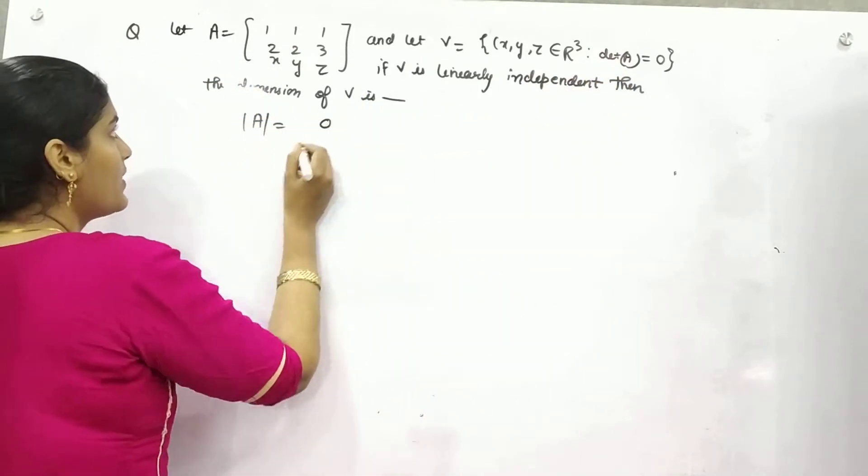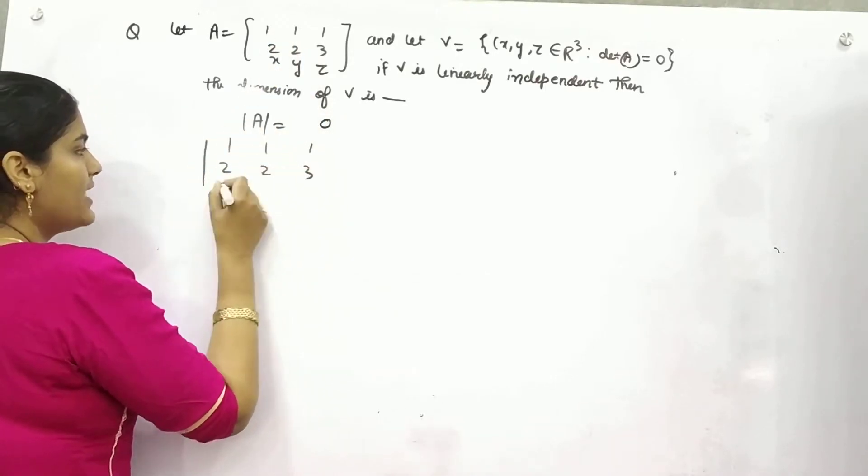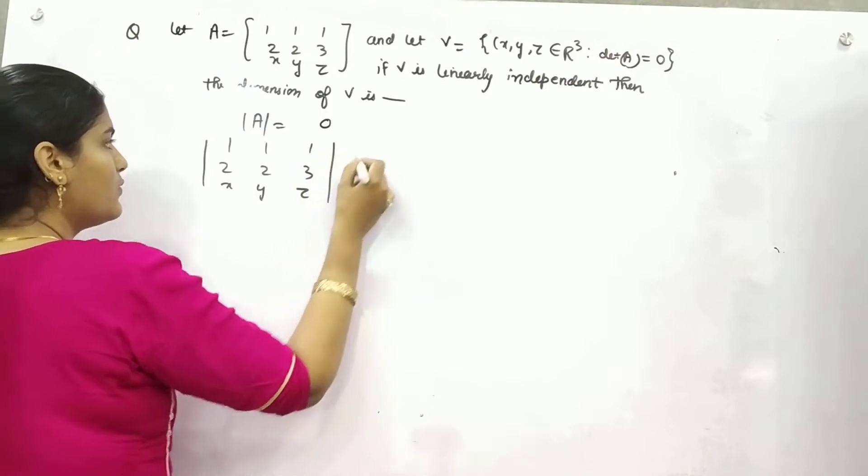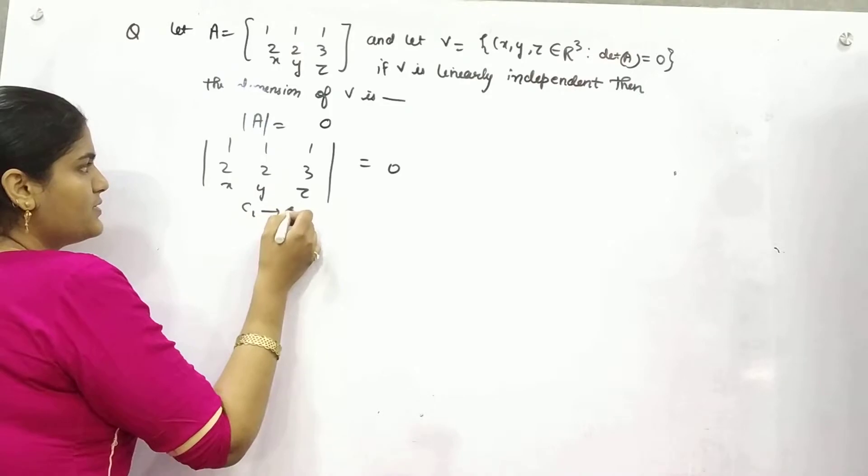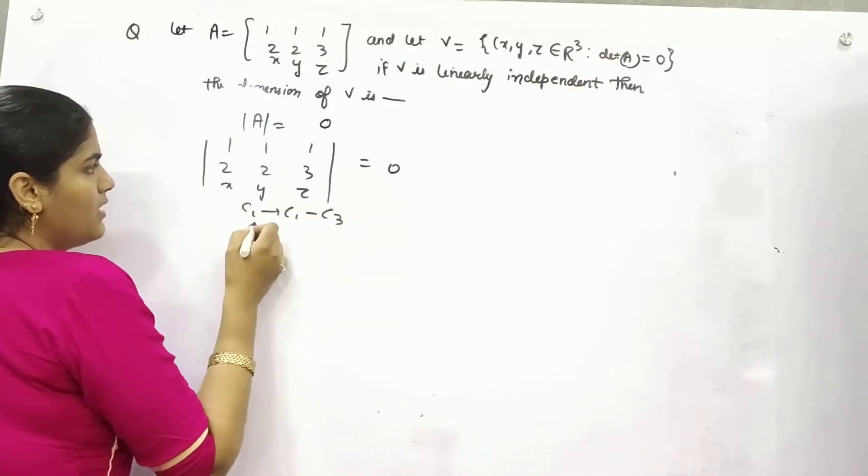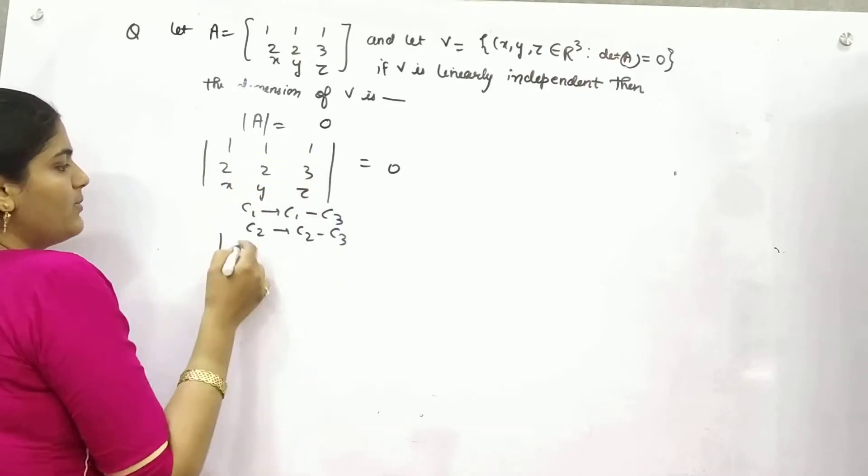So let's put it as zero. The determinant of the matrix [1, 1, 1; 2, 2, 3; x, y, z] equals zero. How can we find it? Let's say if we do c1 → c1 - c3 and c2 → c2 - c3, what will you get? 1 minus 1 is zero.